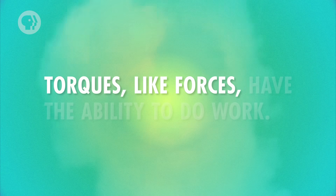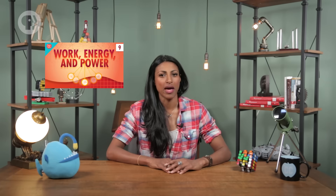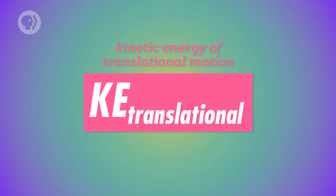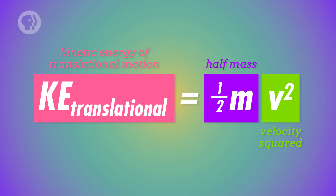Now, there's another thing that torques and forces have in common, and it's going to be the key to figuring out which object wins the race down the ramp — namely, torques, like forces, have the ability to do work. The work done by a force is the integral of that force over a certain distance; similarly, the work done by a torque is the integral of that torque over a certain angle. Work changes the energy of a system — for example, it can change kinetic energy. For objects that move without rotating, all of that kinetic energy goes into translational motion, where kinetic energy equals half the object's mass times its velocity squared.